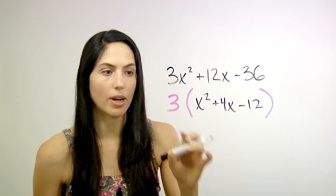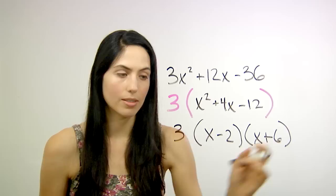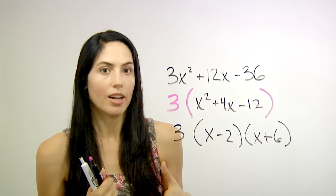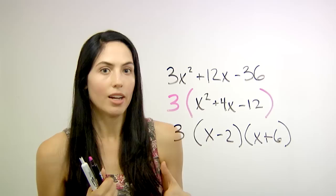And this would factor the same as before, x minus 2 times x plus 6. Next we're going to look at a truly tougher example, and I'll show you the magic X trick that will work for any factoring problem.